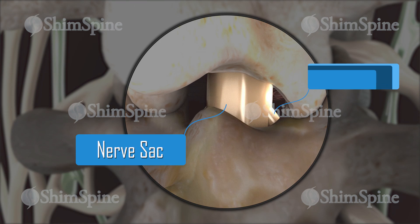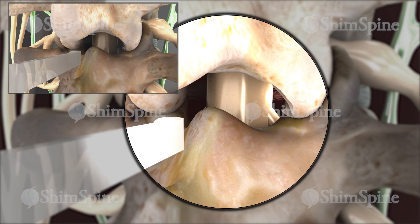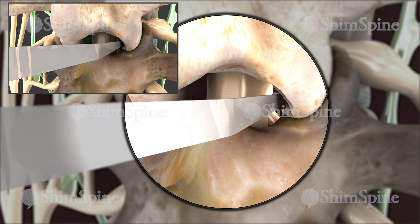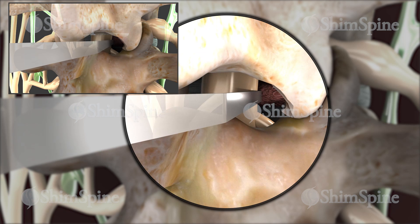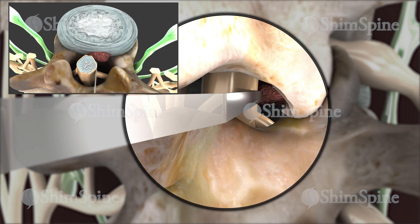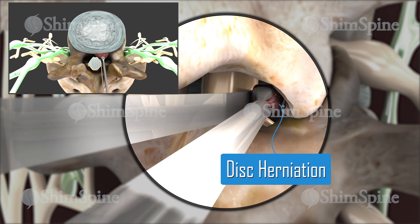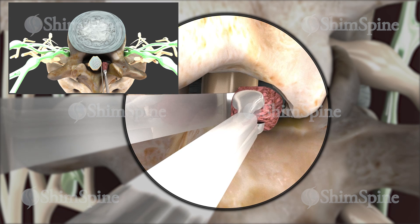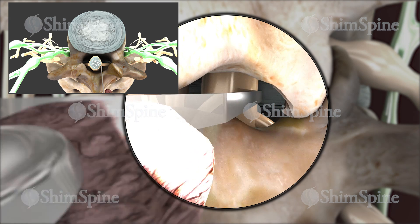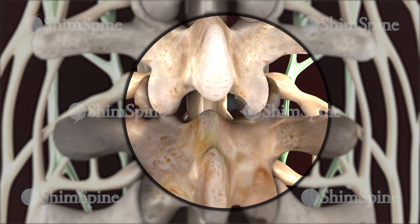The nerve sac is then identified and protected. The nerve sac and nearby nerves are then gently swept off the offending disc herniation, and the disc herniation is removed and the nerve is now free of pressure. Associated bone spurs may also need to be removed.